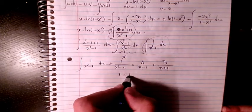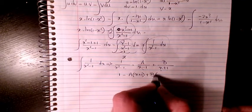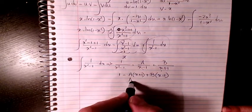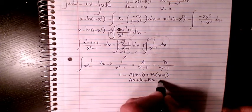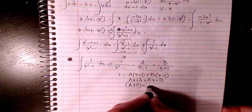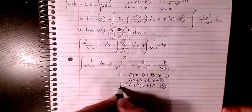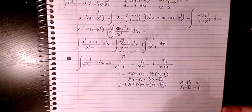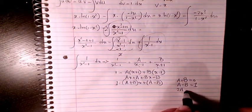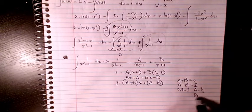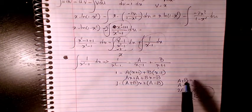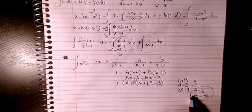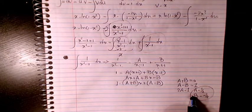Expanding: 1 equals Ax plus A plus Bx minus B, so I get (A plus B)x plus (A minus B) equals 1. This gives the system: A plus B equals 0 and A minus B equals 1. Adding these two equations, 2A equals 1, so A equals 1/2, and therefore B equals negative 1/2.